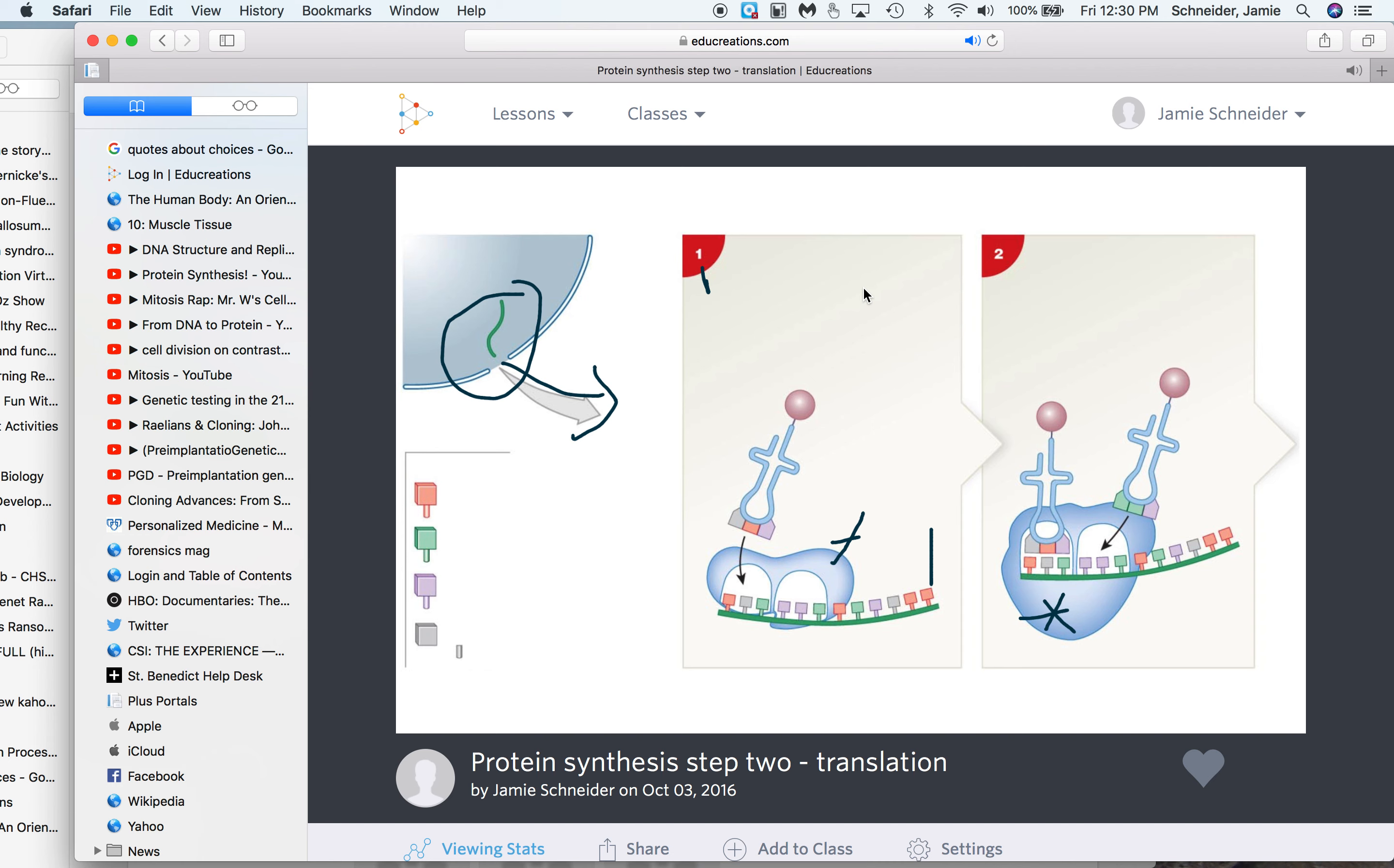Once I get the green thread between the small and large subunits, then a tRNA, which is shown right here, has two sides. This is the amino acid that it's going to bring into the equation of building the protein, and this is the anticodon.